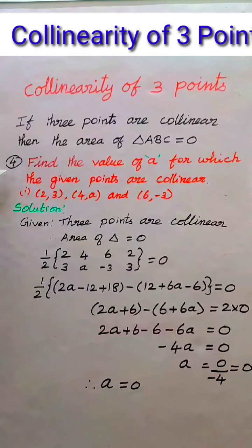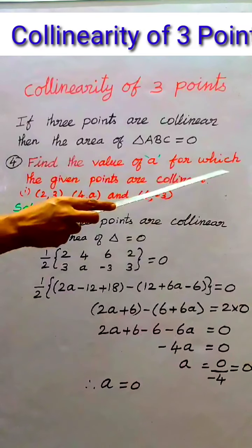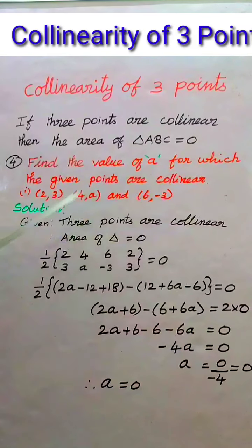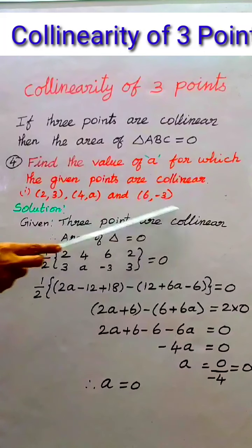Exercise 5.1, problem number 4. Find the value of A for which the given points are collinear. The points are (2,3), (4,A), and (6,-3).